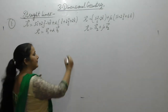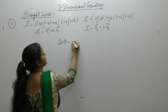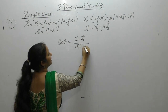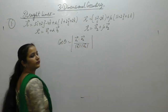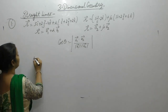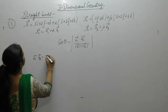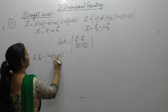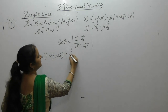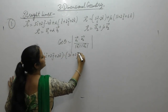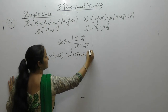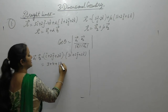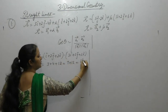We want to find the angle between these two lines, equal to b1·b2 upon the magnitude of b1 times the magnitude of b2. First find b1·b2: b1 is i + 2j + 2k, b2 is 3i + 2j + 6k. The dot product is 1×3 + 2×2 + 2×6, which equals 19.